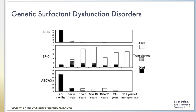This figure presents outcomes of patients with several of these genetic surfactant disorders. On the x-axis is age, and on the y-axis is the specific genetic mutation. The bars show the number of patients who are alive, transplanted, or who have died. Note the very high rates of early lethality in surfactant protein B deficiency and ABCA3 deficiency, with the majority of subjects deceased by three months of age. Surfactant protein C has a variable outcome, with some individuals dying early but others surviving into adulthood with no symptoms.